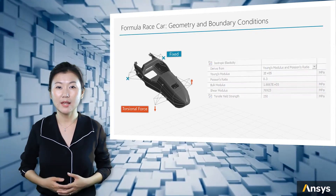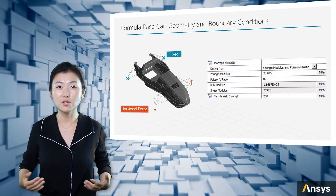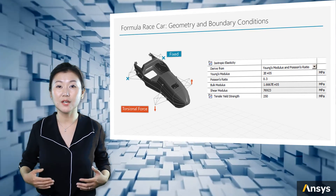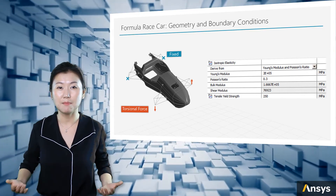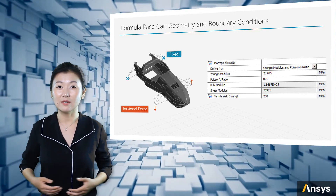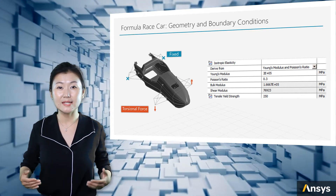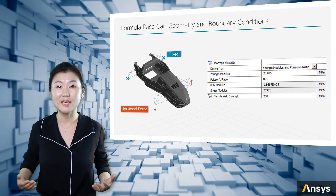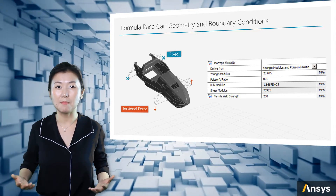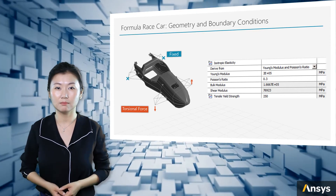For this problem, the material used for the chassis is simplified to be a homogeneous metal material. The failure stress is assumed to be the yield stress, 250 MPa.